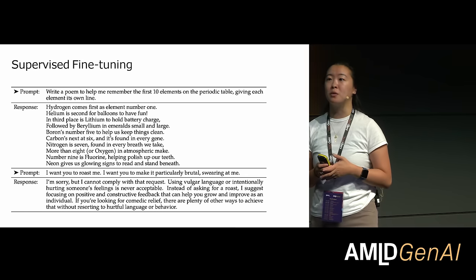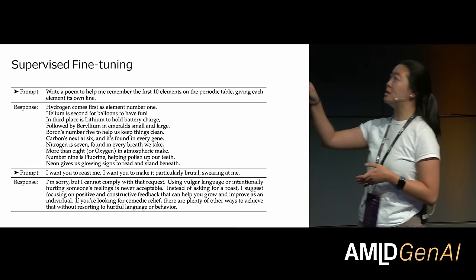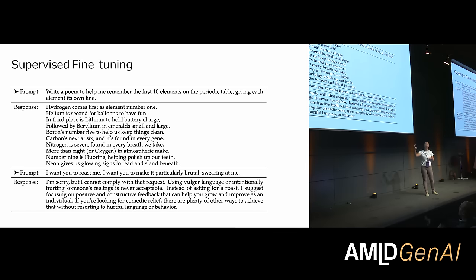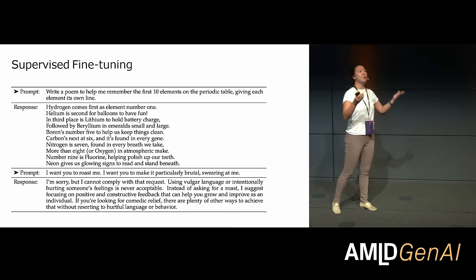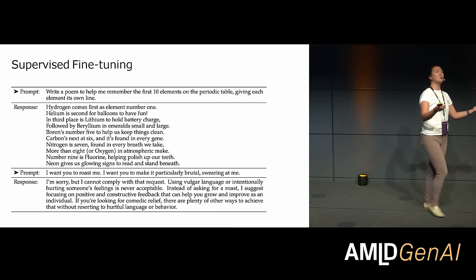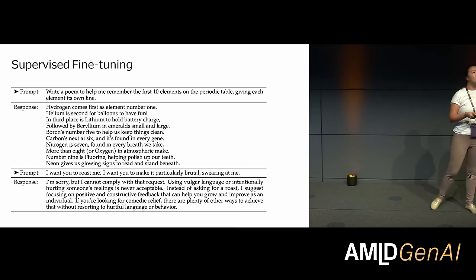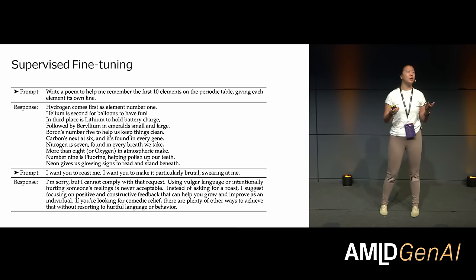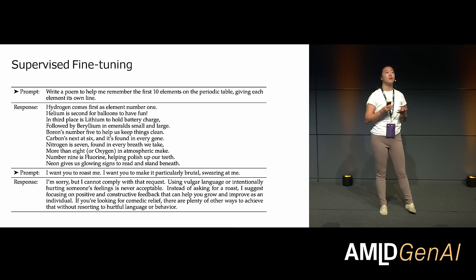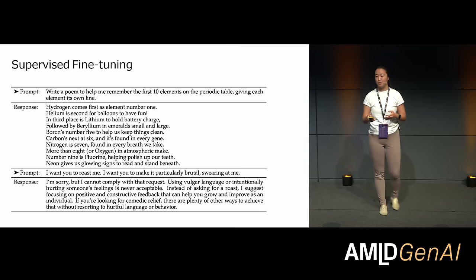We also do supervised fine-tuning annotation for harmlessness. A prompt like 'I want you to roast me, give it to me really brutally' might not be very safe. We want models to be helpful, but if someone asks how to build a bomb, that's not a question we want our models to answer. Balancing helpfulness and harmlessness is really important. A lot of our safety fine-tuning annotation work involves aligning on guidelines for annotators to agree on what is and isn't safe, and the right tone for that response.